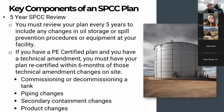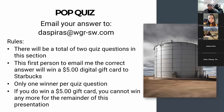That does it for the first half of the training on SPCC plans. Now for a pop quiz — you can win a $5 digital gift card to Starbucks. There will be two quiz questions, and the first person to email me the correct answer wins. If you win, you can only win once — so it's only $5 for the whole presentation for you, but you're more than welcome to still participate.